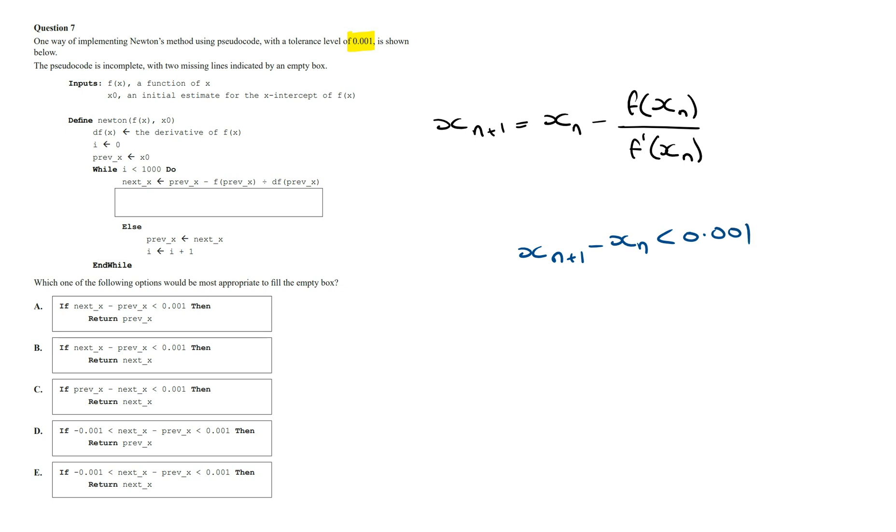Now we need to be careful here. The difference in distance can be in both the negative and the positive direction, and so it's important to consider both the positive and the negative values of this difference. And so this also has to be larger than minus 0.001.